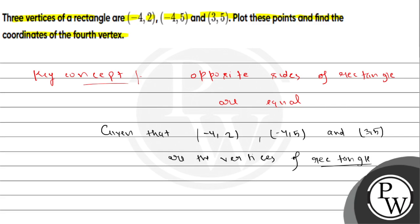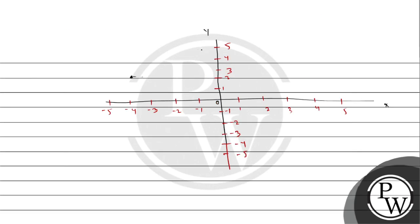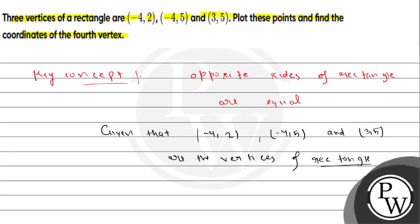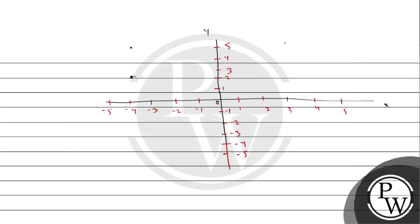This point is minus 4,2. This point is minus 4,5. This point is 3,5. And this point is minus 4,5. This point is minus 4,2. This point is 3,5.